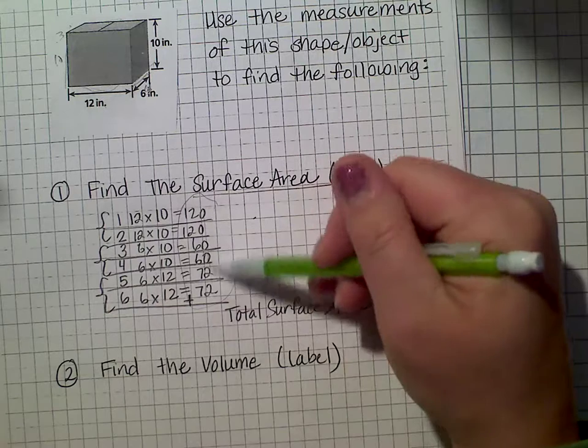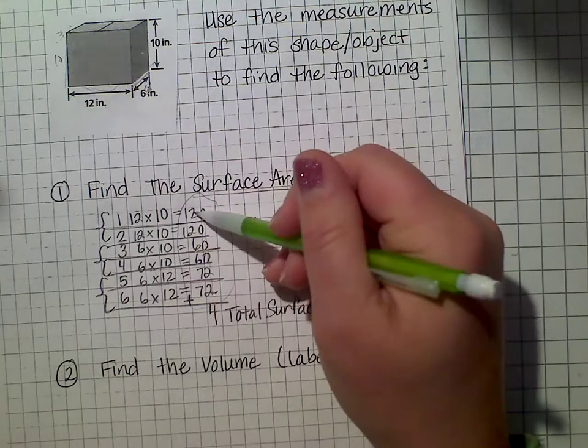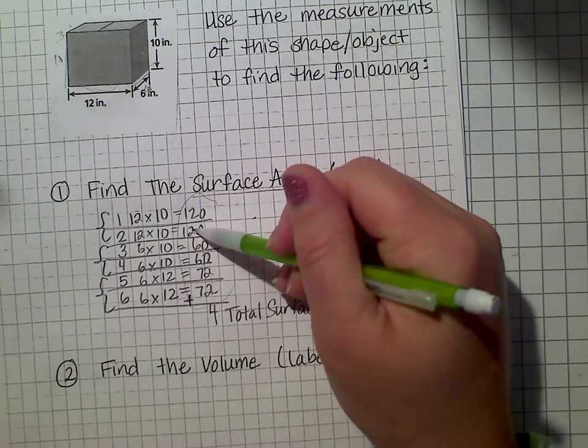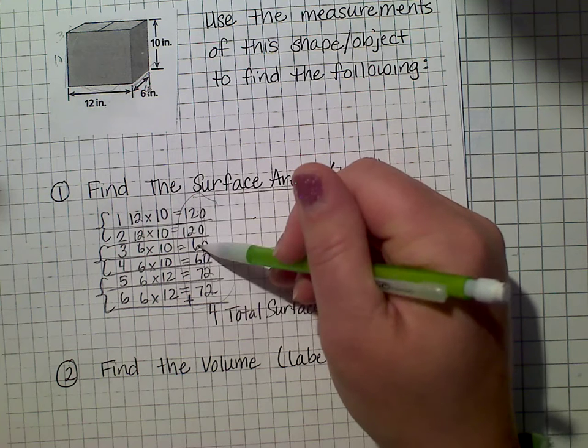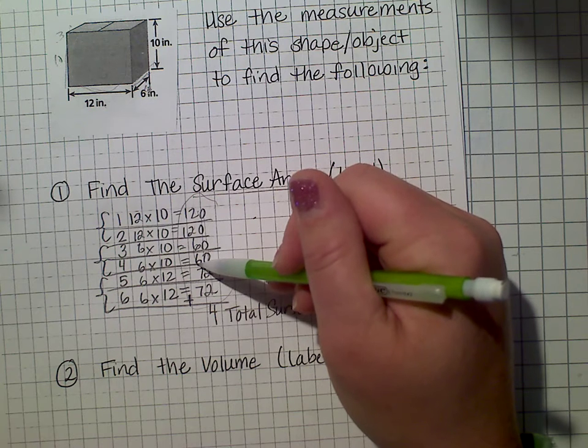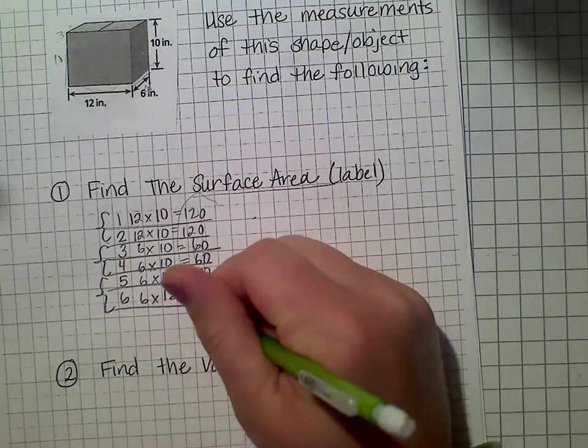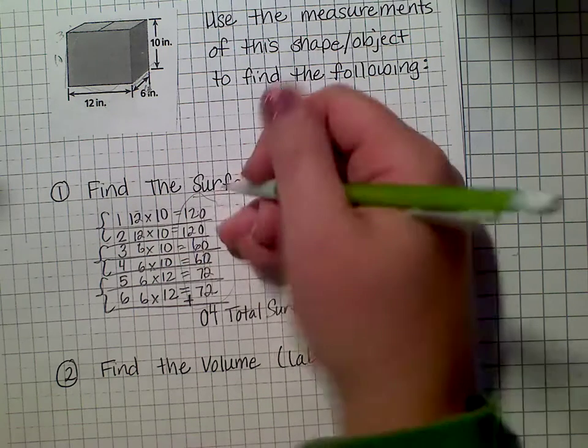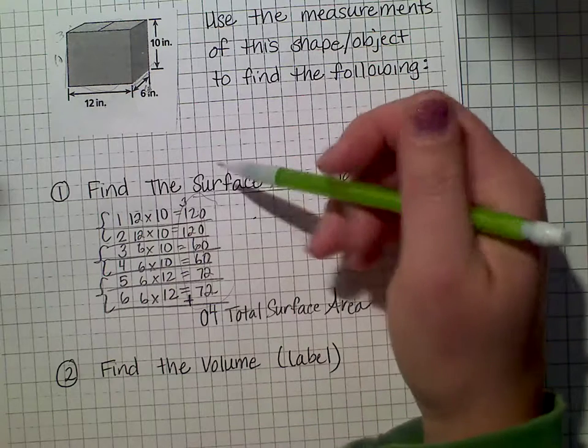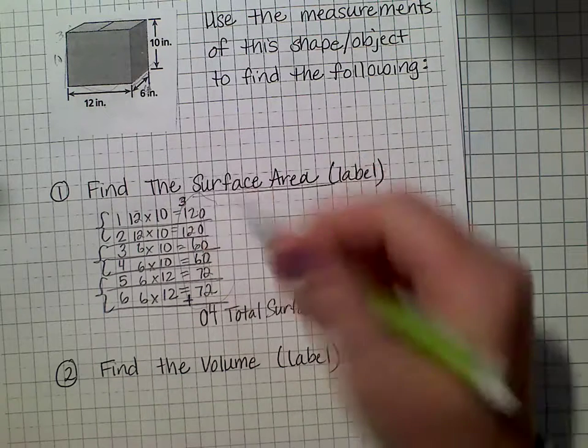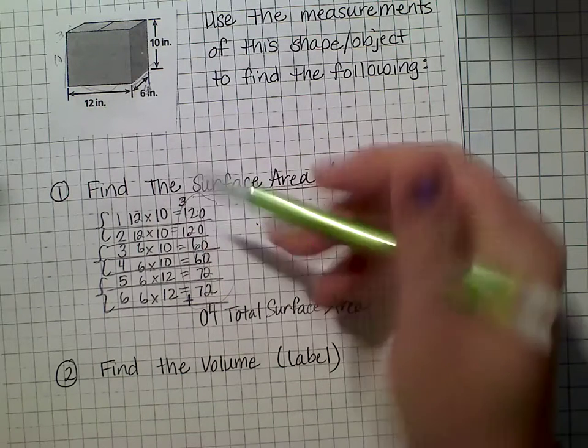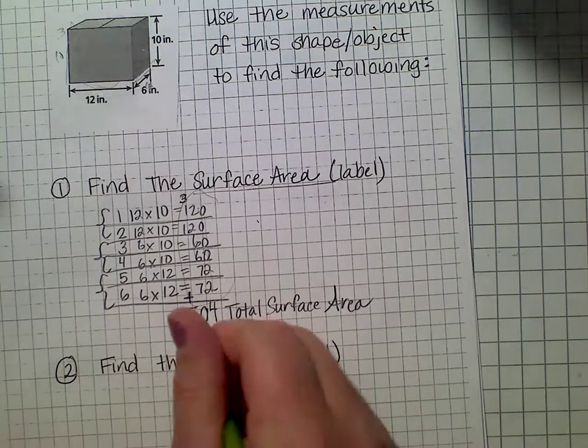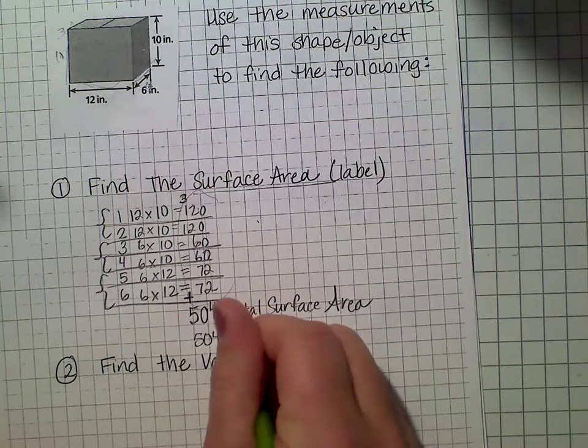And now I'm just going to go through and add my columns. My 1s column has a total of 4. My 10s column is 7, 14, 16, 18. And 18 and 12 would be 20. So I'll put my 0. Sorry, 18 and 12 would be 30. So I'll put my 3 up here. So 300, 400, 500. 504 is my total surface area, but I should label this correctly. So I would have 504 inches squared. Squared is for area.